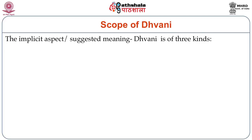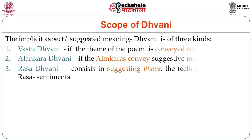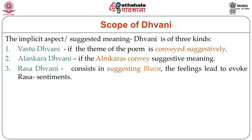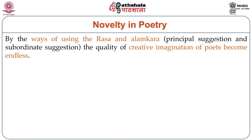In the scope of Dhvani, the implicit aspect of suggestive meaning is of three kinds: Vastu Dhvani, Alankara Dhvani, and Rasa Dhvani. In the benedictory introductory verse itself, he clearly shows all three. If the theme of the poem is conveyed suggestively, it is called Vastu Dhvani. If the Alankara has conveyed the suggestive meaning, it is called Alankara Dhvani. And if it consists of suggesting Bhava — feelings that lead to evoke Rasa sentiments — then it is called Rasa Dhvani. Through the use of Rasa, Alankara, principal suggestion and subordinate suggestion, Uttama Kavyas and Madhyama Kavyas — the quality of creative imagination of the poets becomes endless.